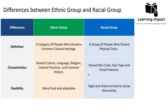So ethnic group and racial group are different in what their members have in common. In the ethnic group it is culture, and in the racial group it is visible physical characteristics. The ethnic group is considered more fluid and adaptable because an individual may adopt the culture and traditions of another society. Culture is dynamic, making ethnic group membership dynamic as well.